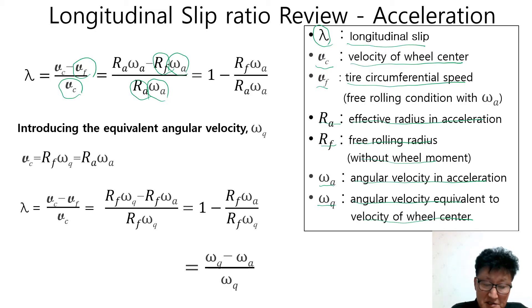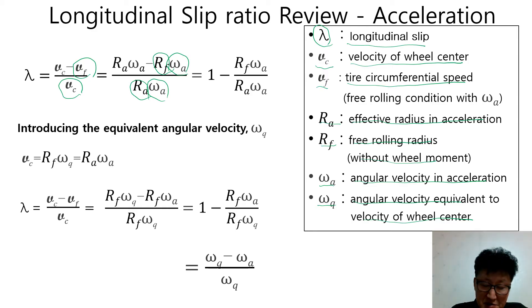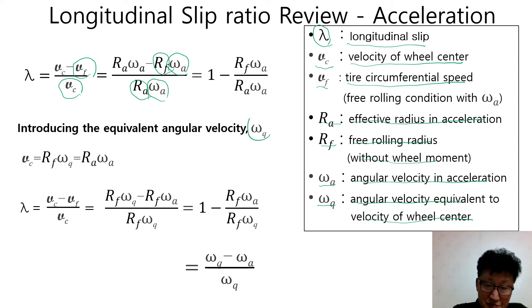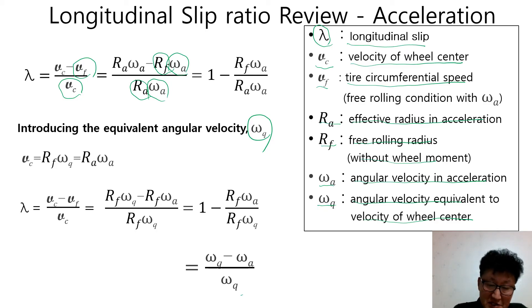Therefore, if the acceleration force is big enough to spin the wheel without longitudinal wheel movement, the slip ratio has a minus infinity value. Introducing the equivalent angular velocity Omega_Q, we can express the slip ratio in terms of angular velocity.